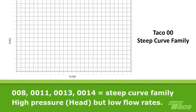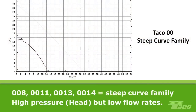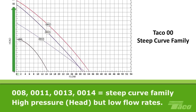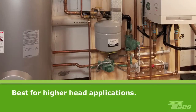On the other hand, models 008, 0011, 0013, and 0014 are all in the steep curve family. Compared to pumps with a flat curve, these circulators can generate a lot of head pressure but comparatively low flow. These circulators are best for higher head applications, such as high head loss fan coils, air handlers, and heat exchangers.